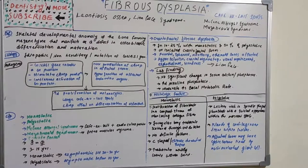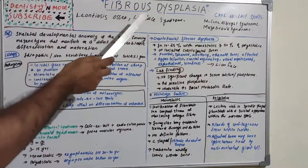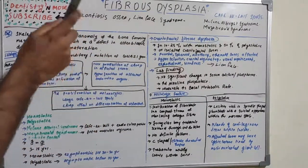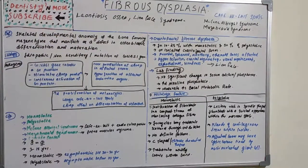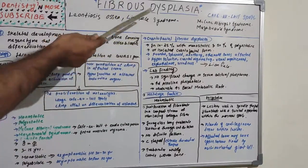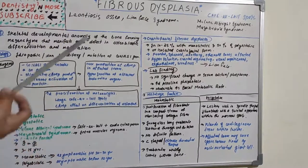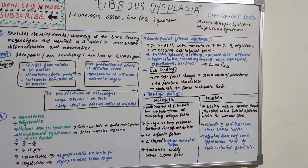Craniofacial fibrous dysplasia is also known as leontiasis ossea, or lion face syndrome. This lion face appearance is not exclusive to fibrous dysplasia — it is also seen in Paget's disease, hyperparathyroidism, and renal osteodystrophy. Leontiasis is therefore a symptom, not a disease itself; it describes the lion-like facial appearance when facial and cranial bones are involved.